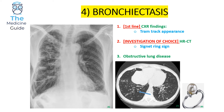On the CT scan you can see a blue arrow pointing towards the classical signet ring sign appearance, and there's also a picture of a signet ring on the far right to help you remember. A common exam question asks you to identify which conditions are obstructive or restrictive lung diseases — bronchiectasis presents as an obstructive lung disease. A memory trick: bronchiectasis contains the letter O, which helps recall it's obstructive.